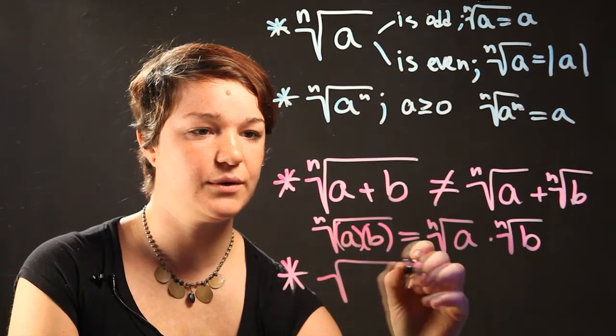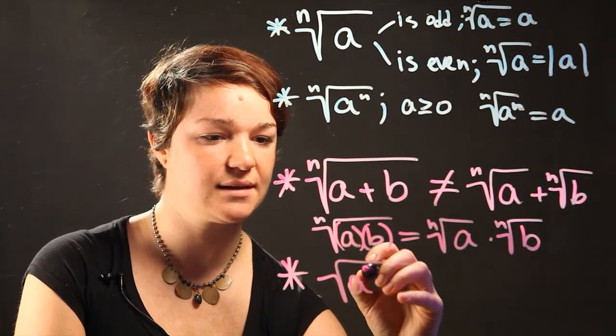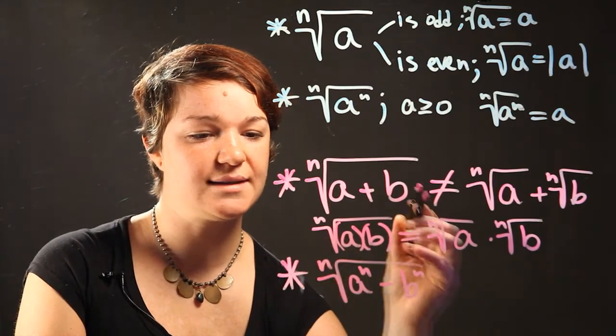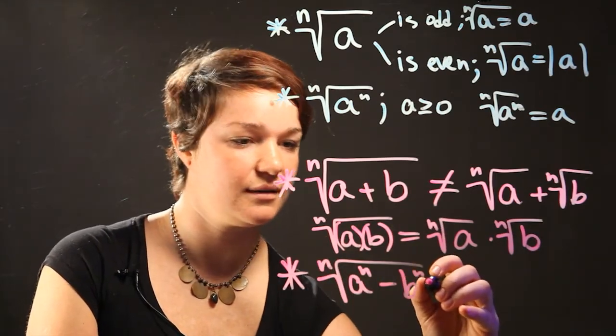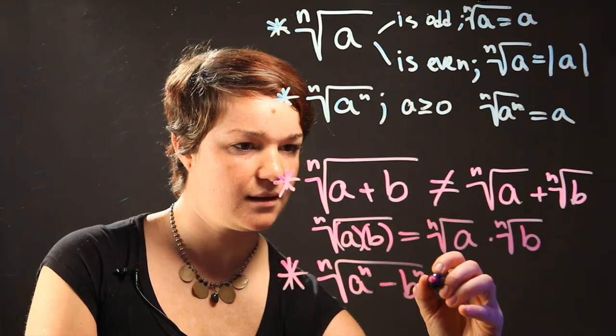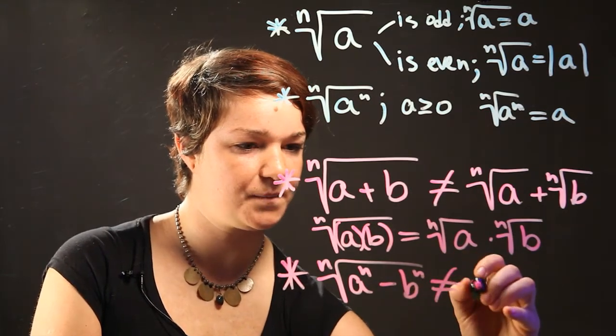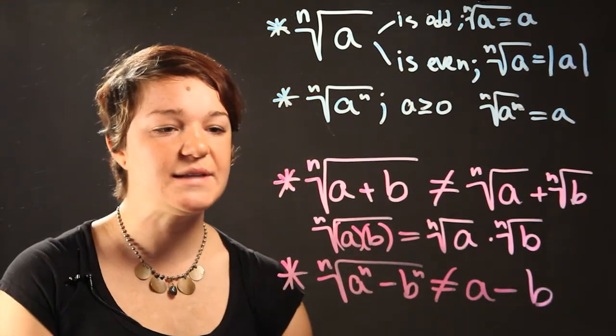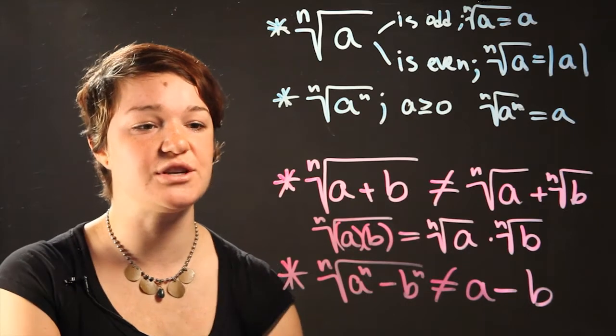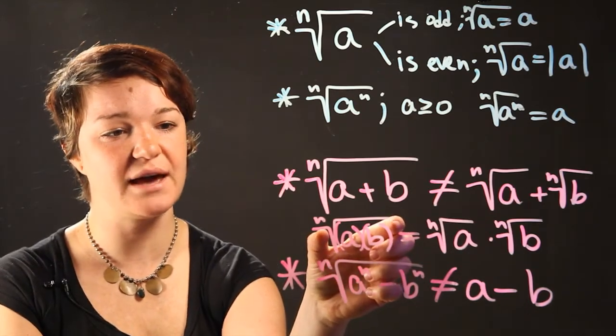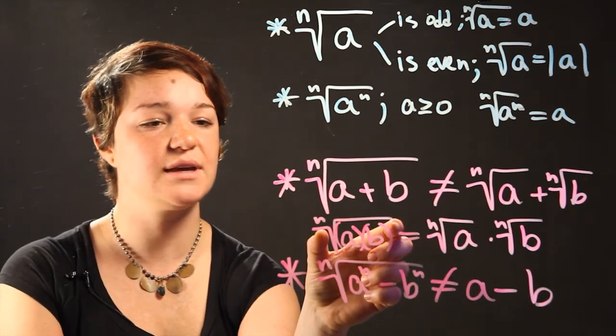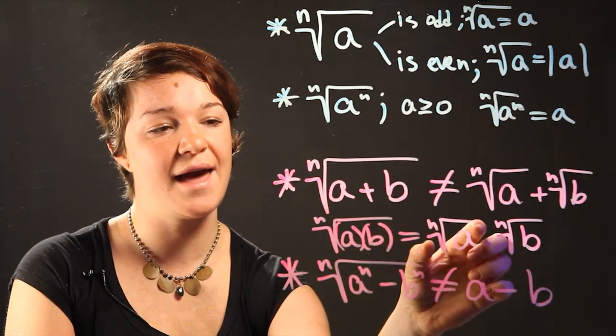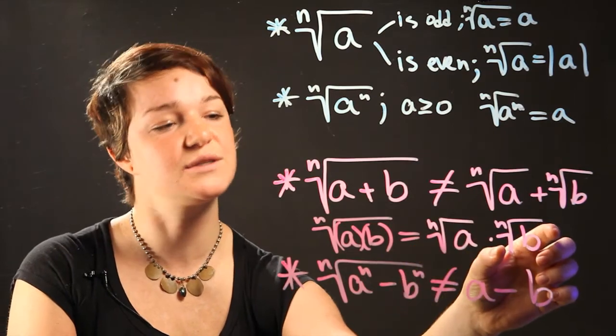Likewise, if you have something that looks like this: a to the n power minus b to the n power under a radical of n, then also it does not equal a minus b. So basically if you have multiplication or division within the radical, such as we have here, then you can simplify it and take those two radicals apart, so you have a with its own radical and b with its own radical.